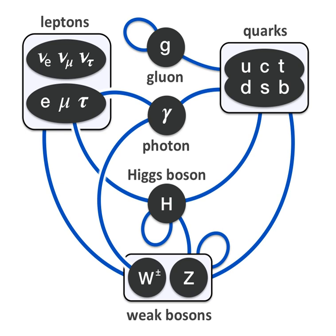Each member of a generation has greater mass than the corresponding particles of lower generations. The first-generation charged particles do not decay, hence all ordinary baryonic matter is made of such particles. Specifically, all atoms consist of electrons orbiting around atomic nuclei, ultimately constituted of up-and-down quarks. Second- and third-generation charged particles, on the other hand, decay with very short half-lives and are observed only in very high-energy environments. Neutrinos of all generations also do not decay and pervade the universe but rarely interact with baryonic matter.